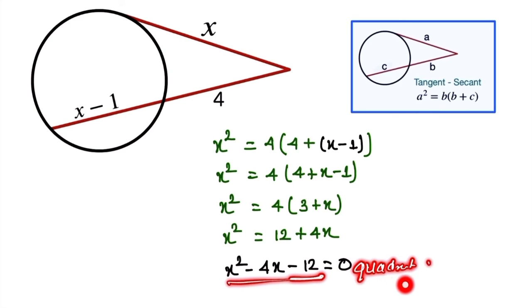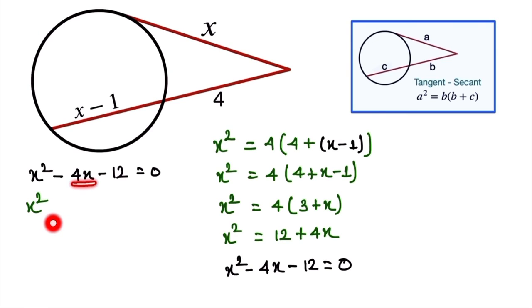This is a quadratic equation. To find the zeros, we rearrange to get x² minus 4x minus 12 equals 0. We can factor by breaking minus 4x into minus 6x plus 2x.